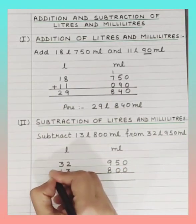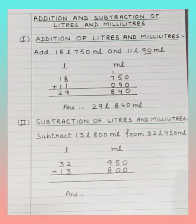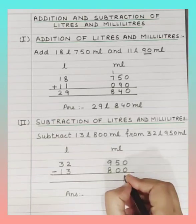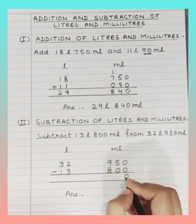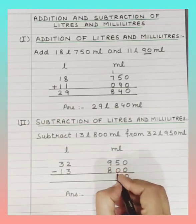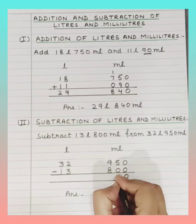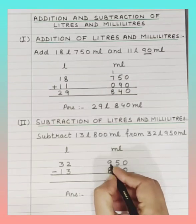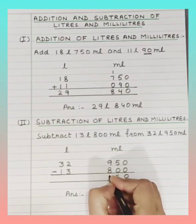Now we subtract 800 milliliters from 950 milliliters. 0 minus 0 is 0. 5 minus 0 is 5. 9 minus 8 is 1.